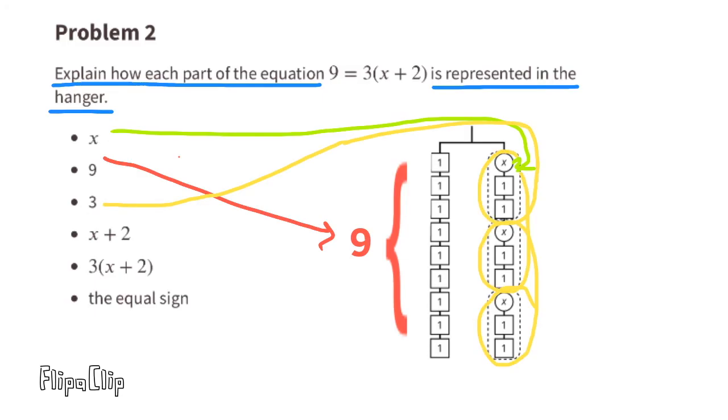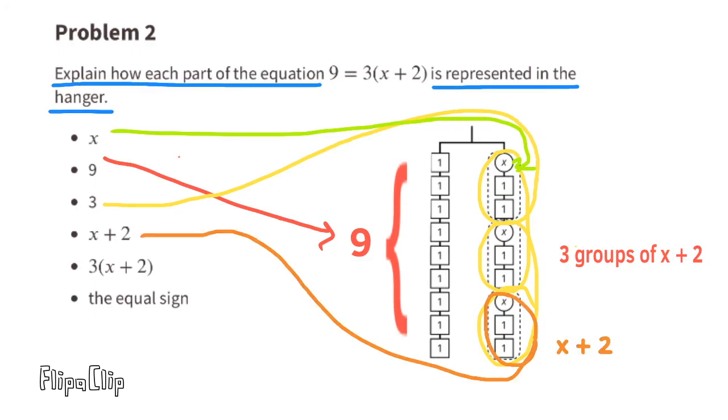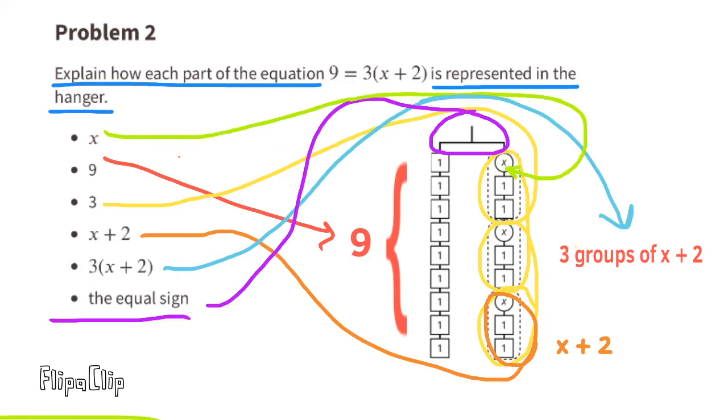3 is represented by the three groups of x + 2 on the right-hand side of the hanger. x + 2: inside each of those groups is an x plus 1 plus 1, which is equal to x + 2. 3 times (x + 2) is represented by the three groups of x + 2. Finally, the equal sign is represented by the middle of the hanger. This shows that the left side is balanced or equal to the right side.